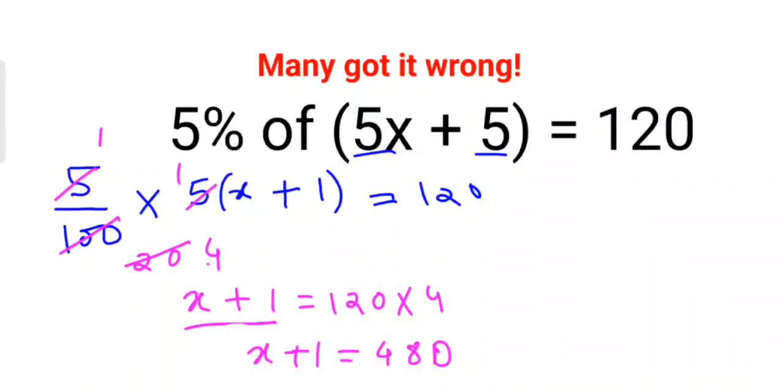Okay. Now next what we can do is in order to find the value of x we will subtract by 1 from both sides. Therefore I can say value of x is coming out to be 479.